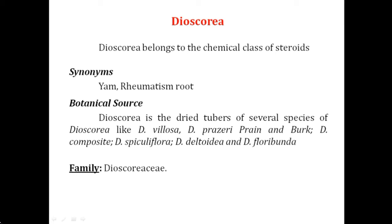The biological source: Dioscorea consists of the dried tubers of several species of Dioscorea. Tubers are the enlarged part of the rhizomes. More than one species are listed — Dioscorea villosa, Dioscorea prazeri, Dioscorea composite, Dioscorea spiculiflora, Dioscorea deltoidea, and Dioscorea floribunda. Among these, Dioscorea deltoidea is the most commonly used species. It belongs to the family Dioscoreaceae.